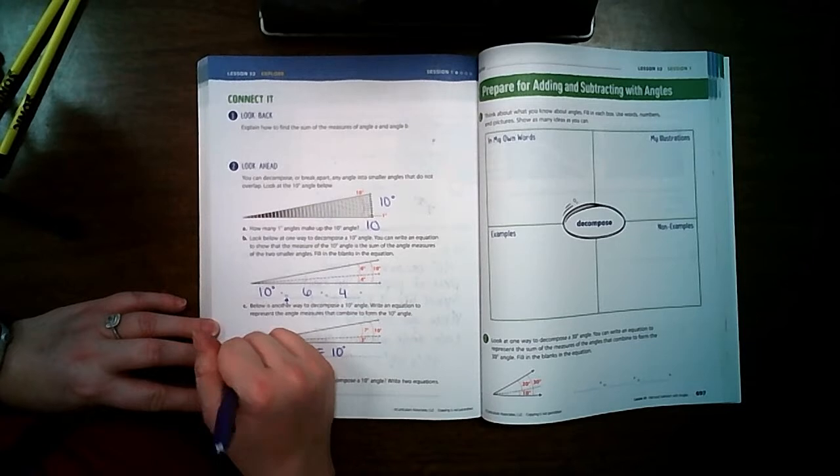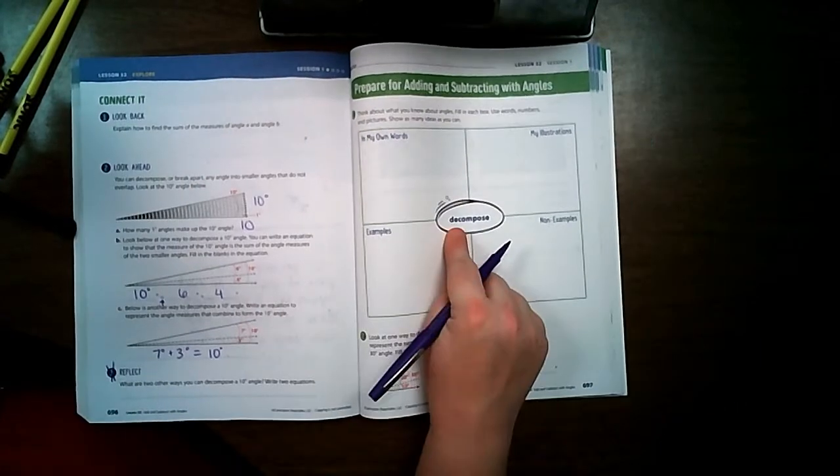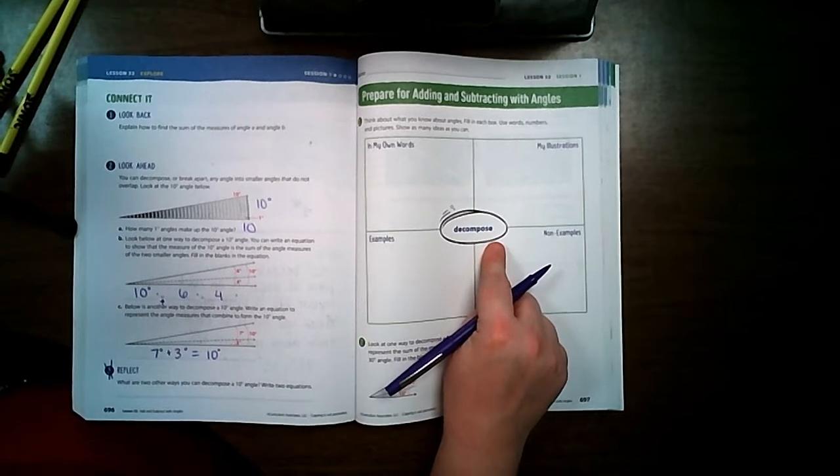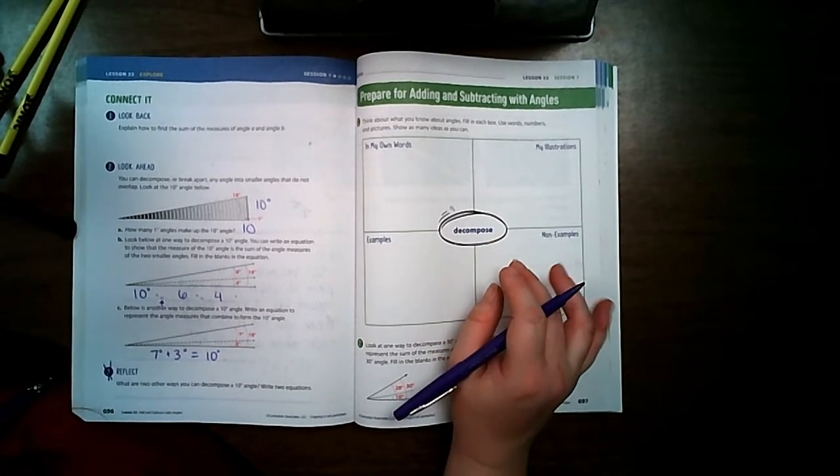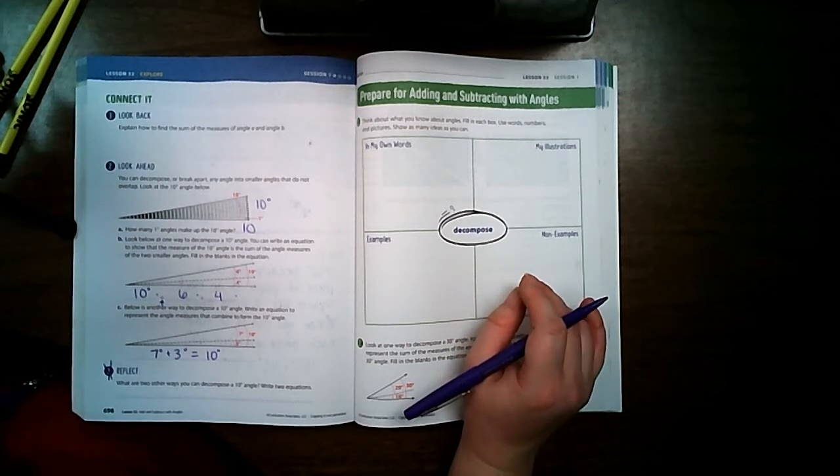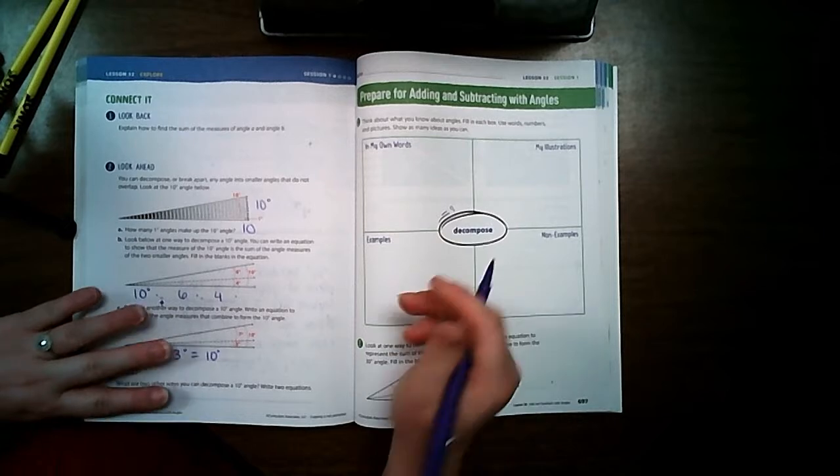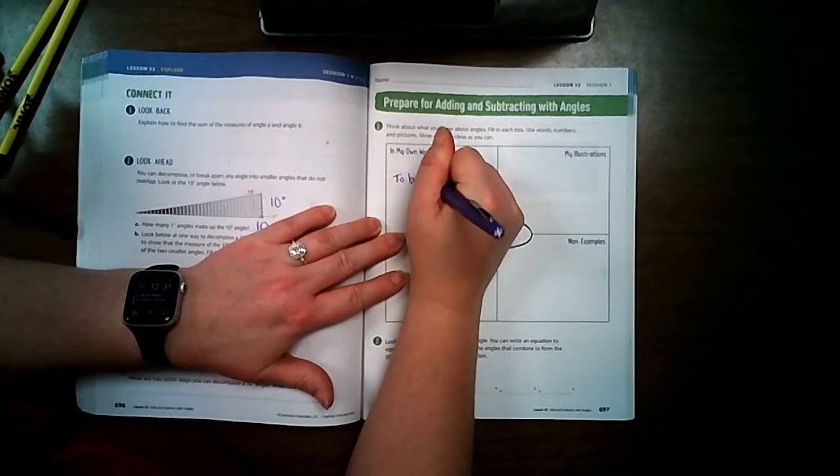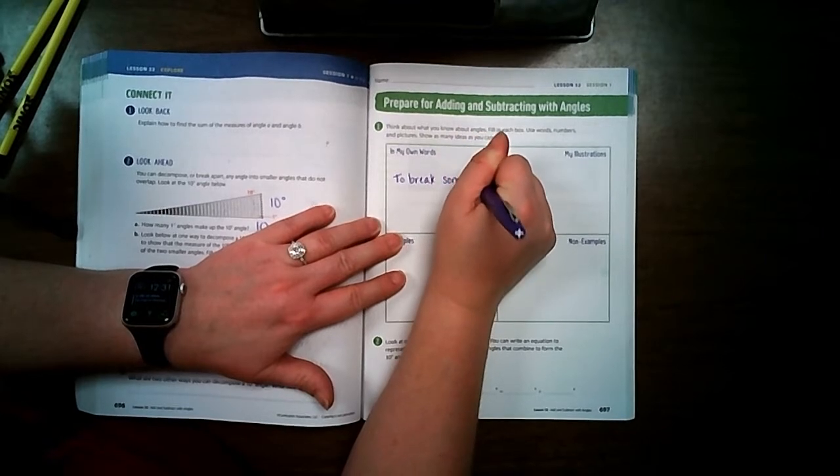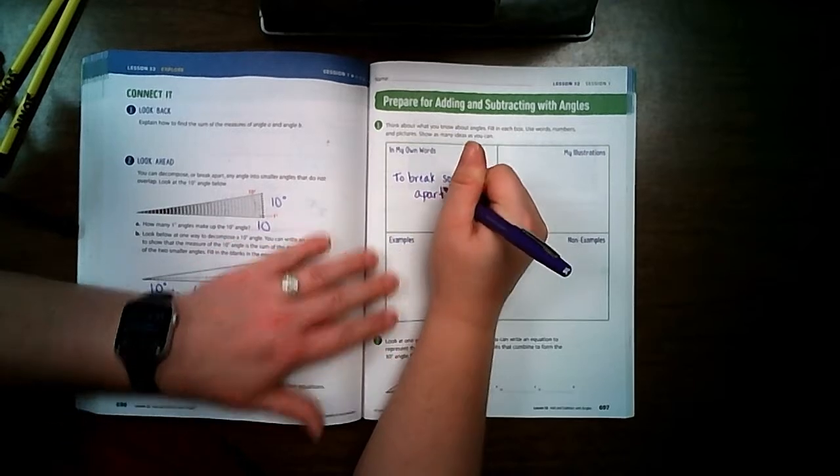We're going to skip number 3. Alright, so our word this week that's important is decompose. And decompose should be a word that you've heard a few times. We decomposed fractions. We've decomposed numbers and place value. So decompose simply means to break something apart. We're breaking it into smaller pieces.